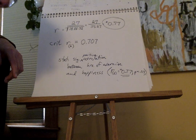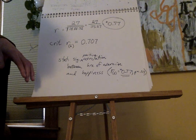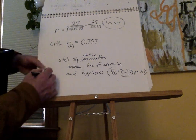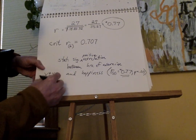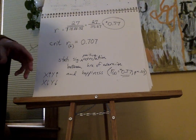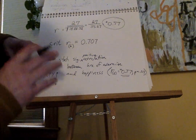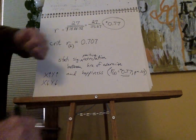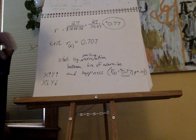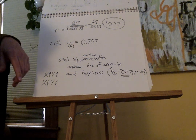Pearson's R has two components. The sign tells you the type of relationship: when variables change in the same direction, that's a positive correlation. With alcohol and GPA, variables changed in opposite directions — as alcohol intake went up, GPA went down — that's a negative correlation. And then the numerical value tells us about the strength of the relationship.